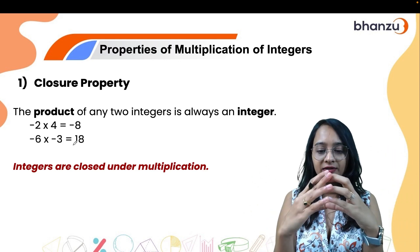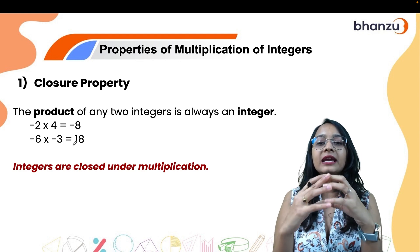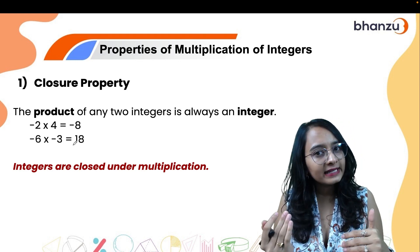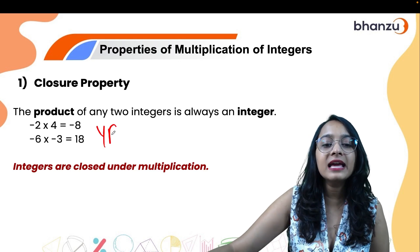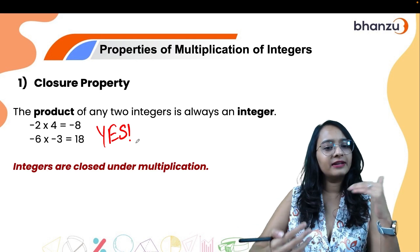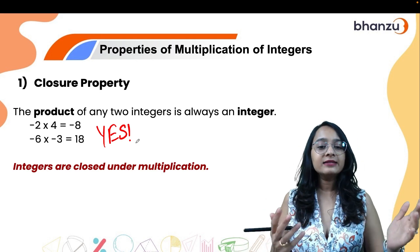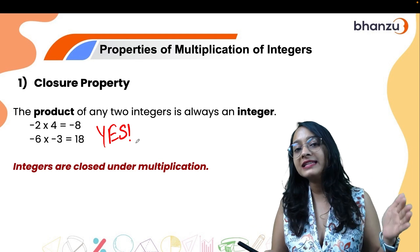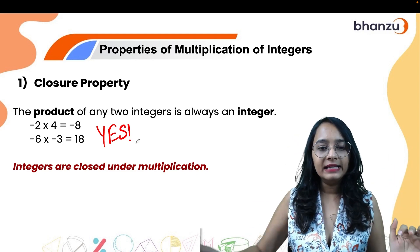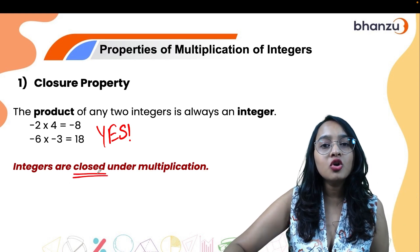Closure property: imagine a closed region that contains only integers. When you take any two integers and multiply them, do you always get an integer? The answer is yes — whether you take a positive and a negative number, two negative numbers, or two positive numbers, the answer is always an integer. So integers are closed under multiplication.